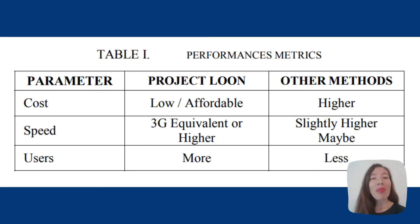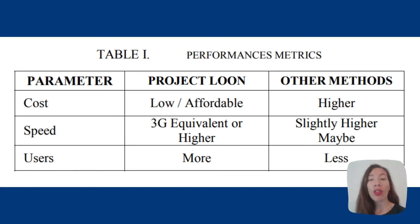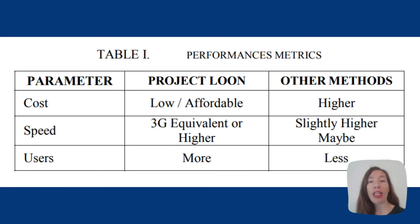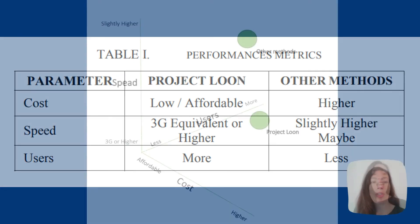The comparison between Project Loon and the other methods in terms of cost, speed, and users is made through a table. As the information is exclusively quantitative, three-dimensional, and rather simple to read, we believe that the table representation in this specific case is effective.